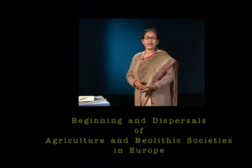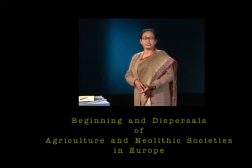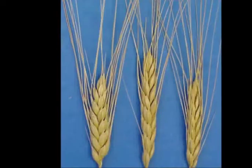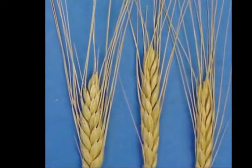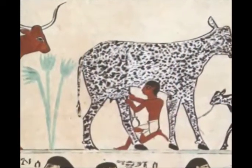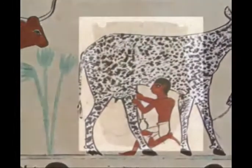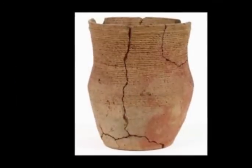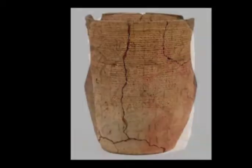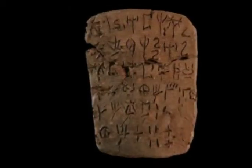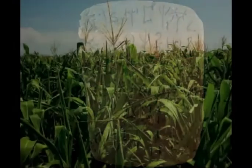Regarding the beginning and dispersal of agriculture and Neolithic societies in Europe: most of the major aspects of the Neolithic period, such as domesticated plants and animals, pottery, and writing, probably came initially from Asia.